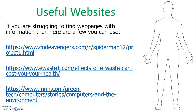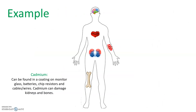Now I want to give you a short example of the type of thing I'm looking for. Here we've got a body — I've put some pictures inside showing a heart, kidneys, a bone, and some red squiggles to represent a burn or itchy skin. On the left we've got cadmium: it can be found in coatings on monitor glass, batteries, chip resistors, cables and wires, and it damages the kidneys and bones.